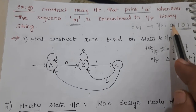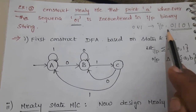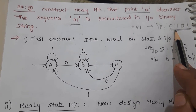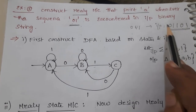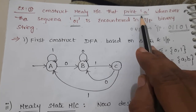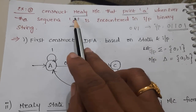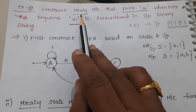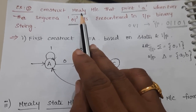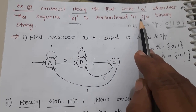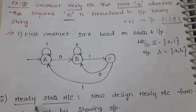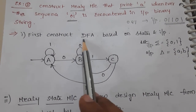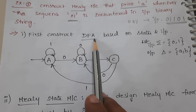We have an input binary string, and whenever 01 comes, it should print A. To achieve this, we need to construct a Mealy machine. The first step is to construct a deterministic finite automata, or DFA.